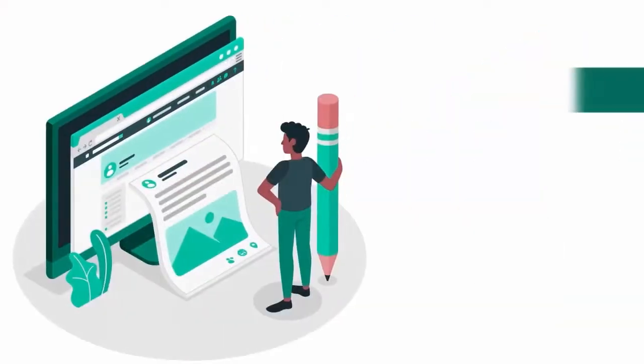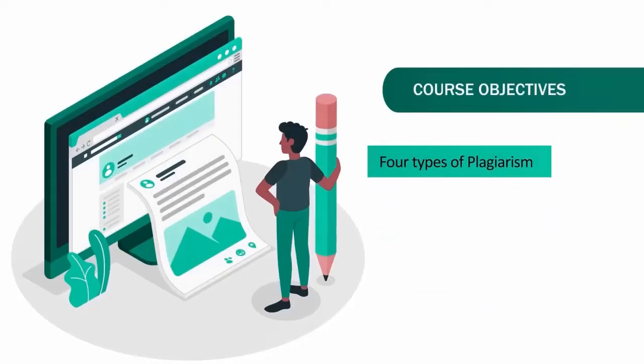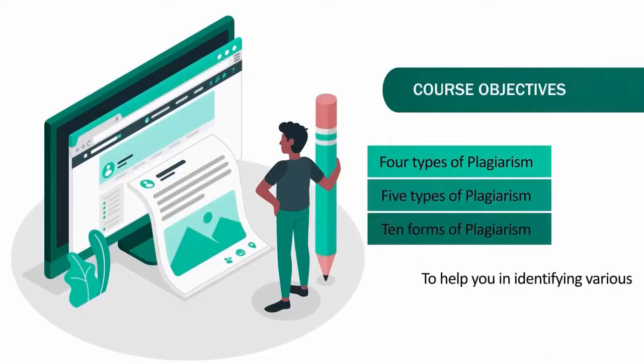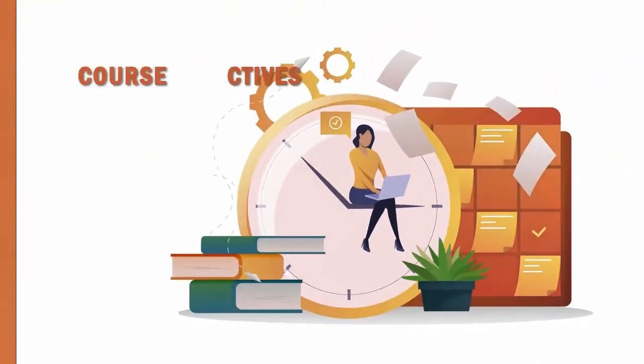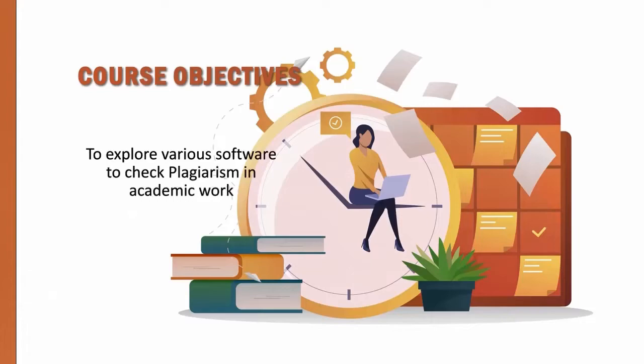The course will discuss different forms of plagiarism. Since there is no universal classification — some sources list four types, others five or even ten — this course will identify the most common forms of plagiarism, how they differ from each other, and how you can check for plagiarism in your academic work. We will cover various software tools, including open-source, freely available, institutional, and paid software.